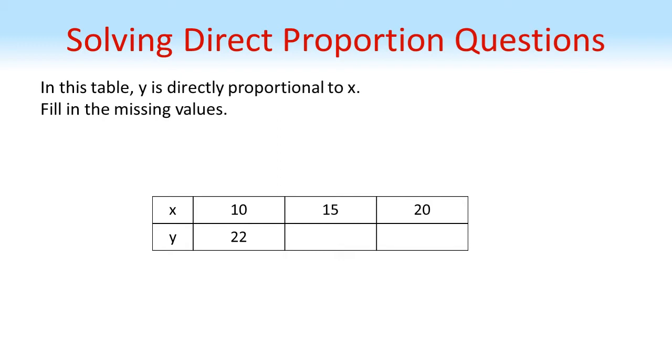So we've got a pair at the beginning of x is 10 and y is 22. We need to find the y that will match with 15 for the x. So if we look at what's happened here, going from 10 to 15, we've multiplied the 10 by 1.5. So because x and y are in direct proportion, we need to do the same to the y value. So 22 times 1.5 is 33.